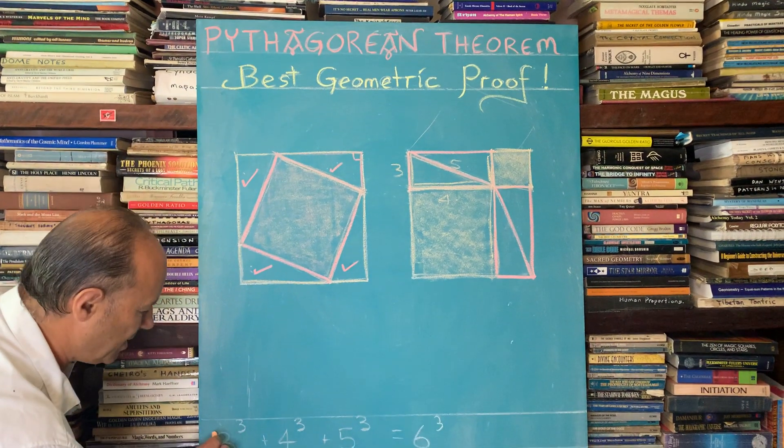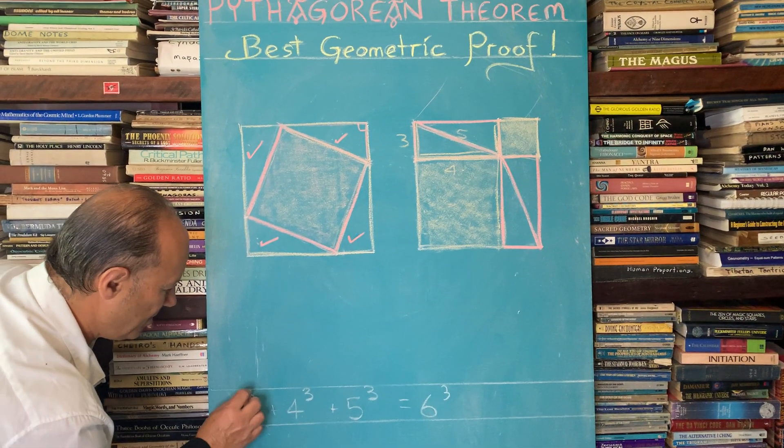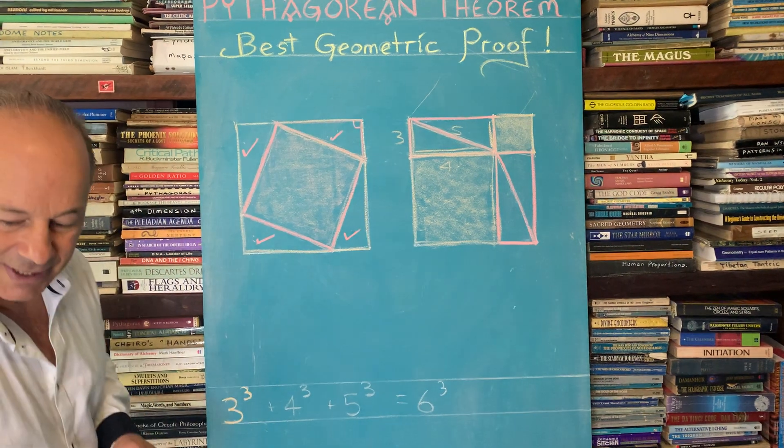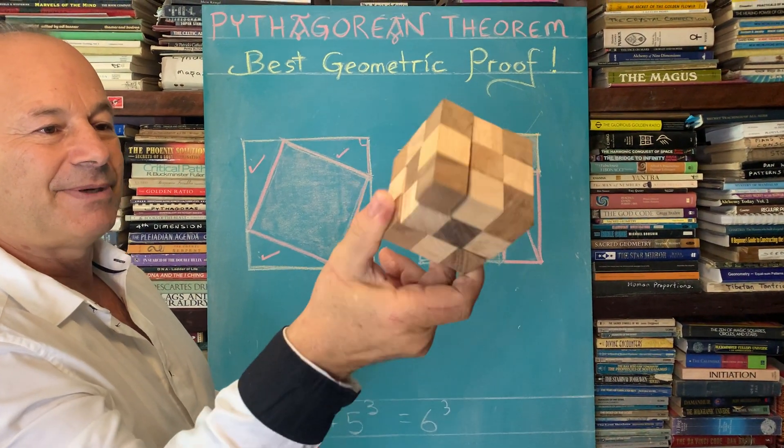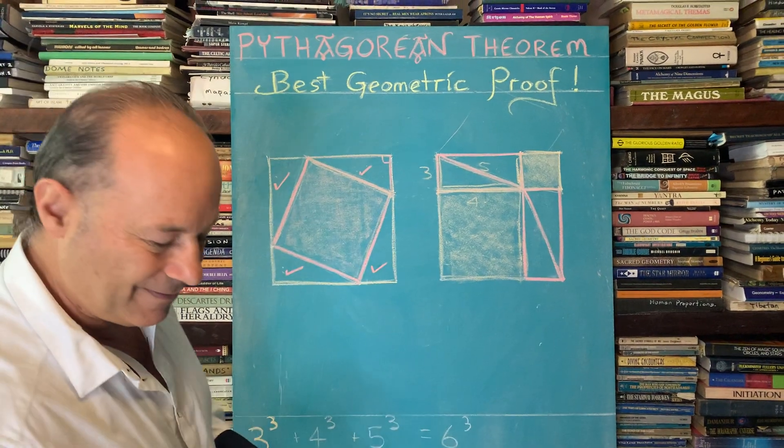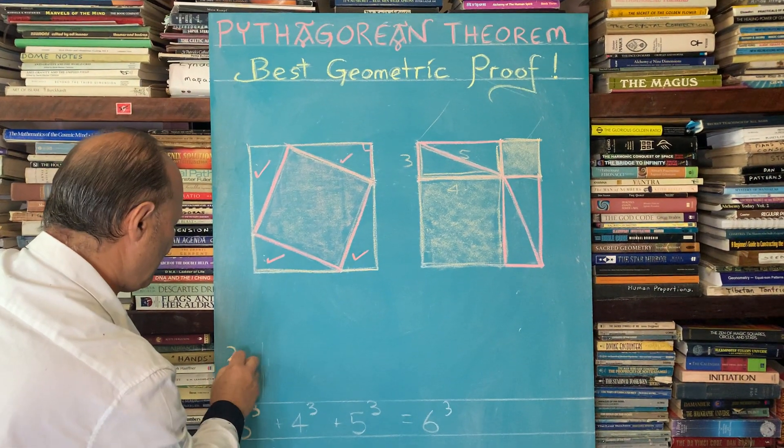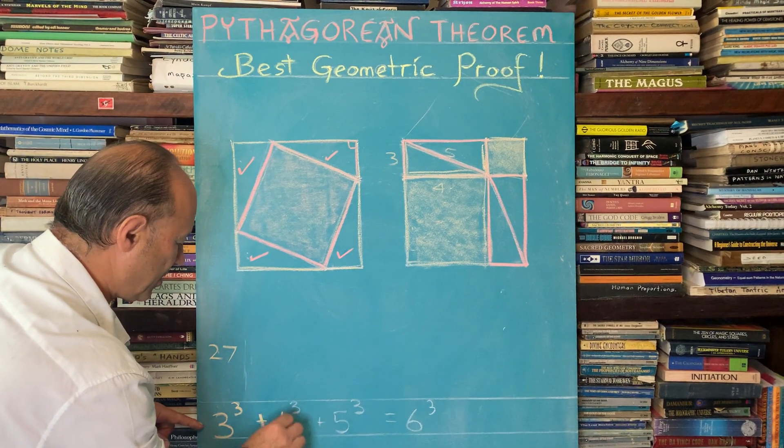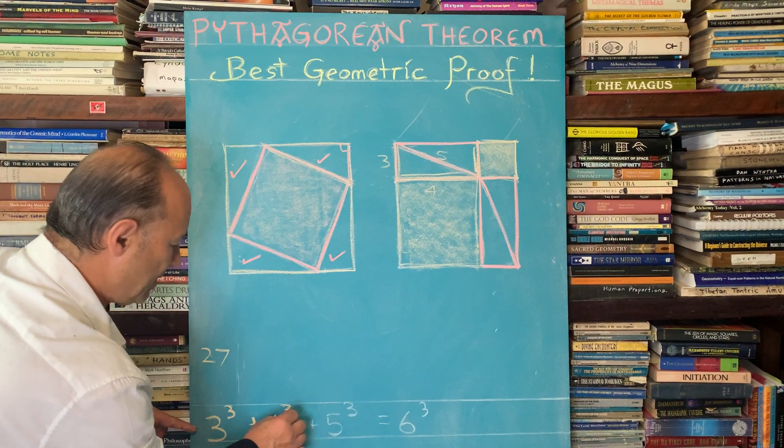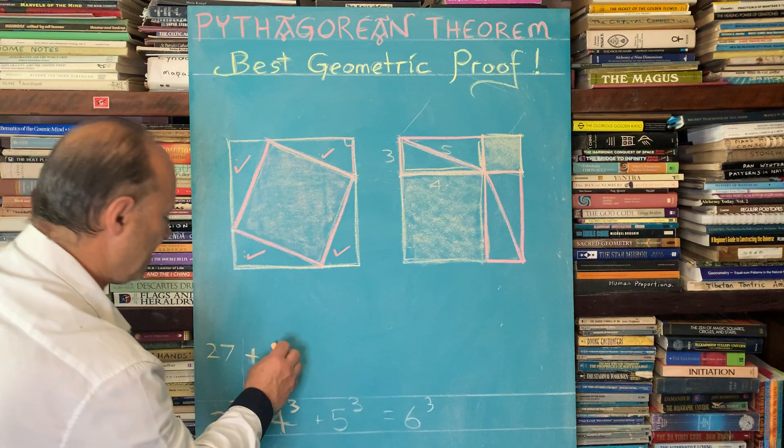There's a thing called three cubed. Three cubed is like your Rubik's cube, this is three cubed here. So we know that three cubed is 27, so I'll write that up. And then if we add the next cube, four cubed, we know that the sum of four cubed is 64.